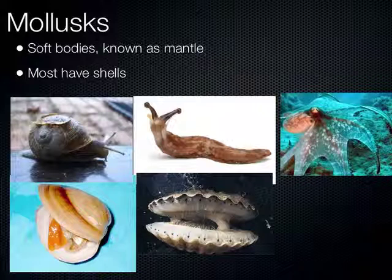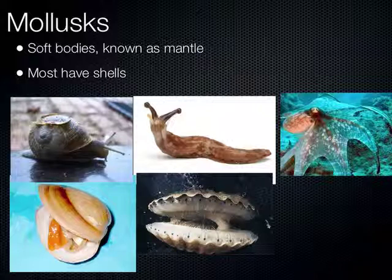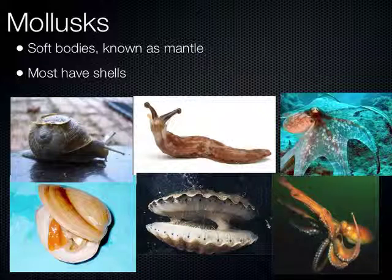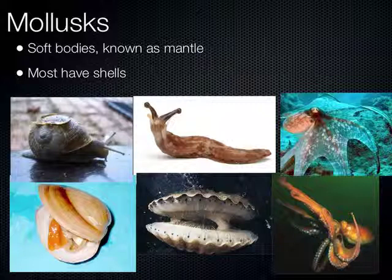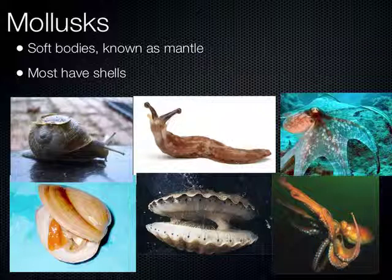Octopus and squid are cephalopods — another type of mollusc. They're more advanced, with well-developed nervous systems and really interesting abilities to camouflage themselves. The giant squid is the largest invertebrate animal — they grow to extremely large sizes. For a long time scientists never saw them alive in their native habitat, though they did finally several years ago. They're a very interesting type of invertebrate.